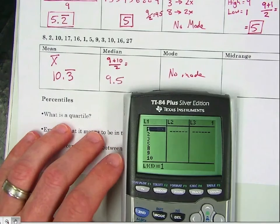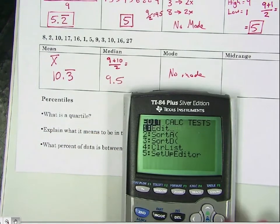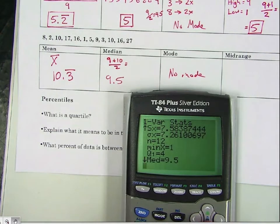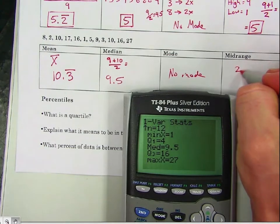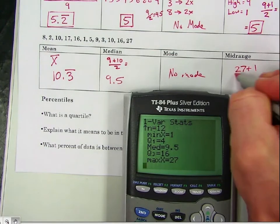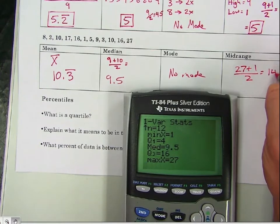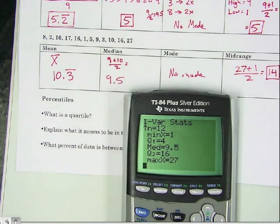And for the midrange, we'll get back to our stats here. It does give you the minimum and the maximum, but that's it. You have to find it on your own. So you're going to go 27 plus 1 over 2, which is 14.